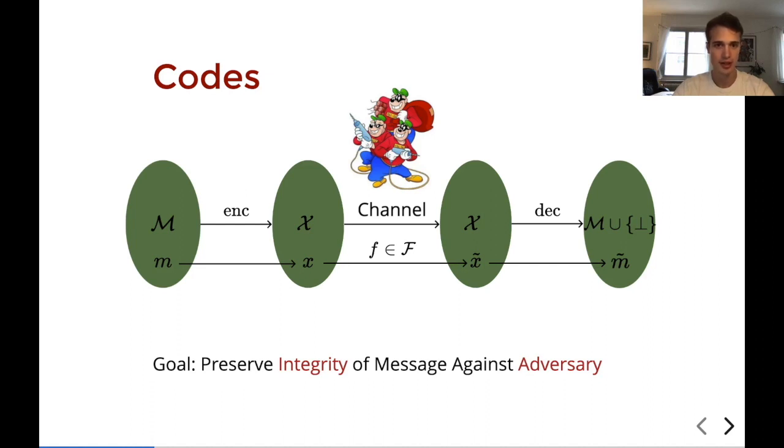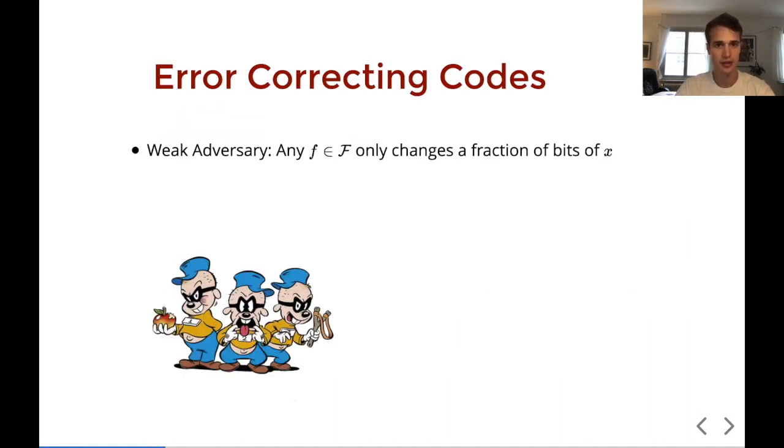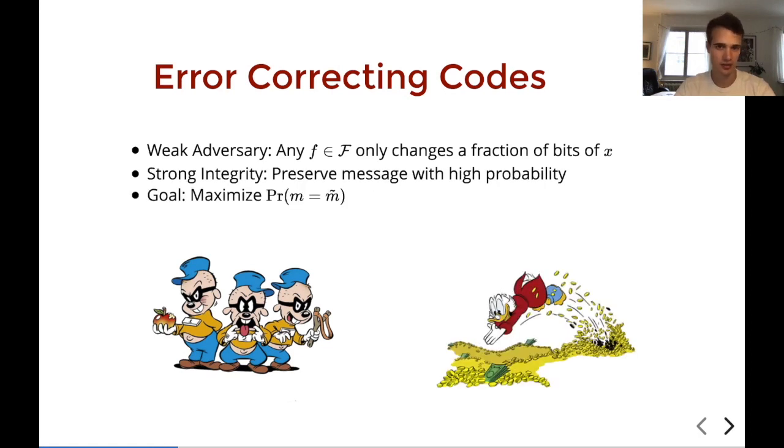We hope that this encoding helps preserve the integrity of the message against the adversarial attack. So we can discuss what does integrity mean? How do we want the message to be preserved? And furthermore, which attacks are the adversary allowed to launch? The classical example is that of error correcting codes. In error correcting codes the adversary is fairly weak. He can only change a fraction of the bits of the encoded message. And this means that we get very strong guarantees. Actually we can guarantee that we preserve the message exactly. We get all sorts of nice stuff like the encoding is not very long and so on.